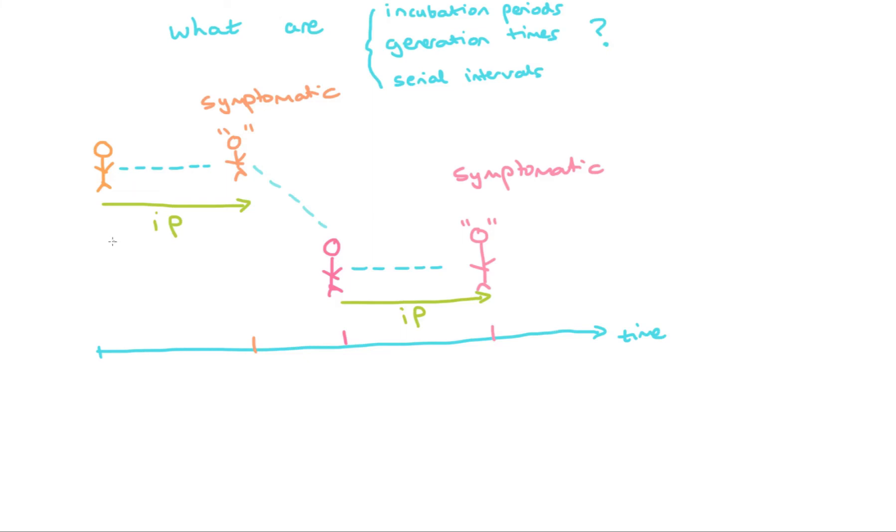We can also define what's the generation time. The generation time is the amount of time between when the first individual was infected and when they went on to infect a subsequent person. Here we have a generation time which is given by this, which I've plotted on here.